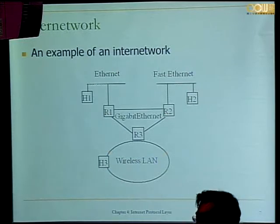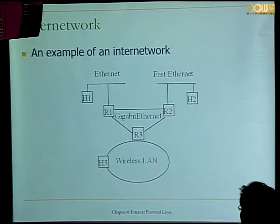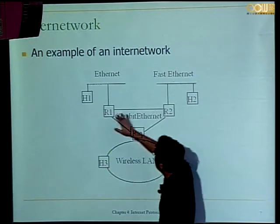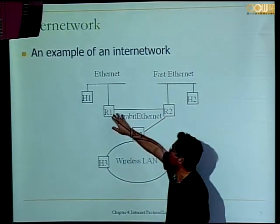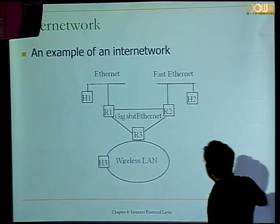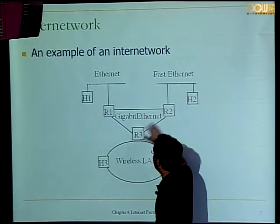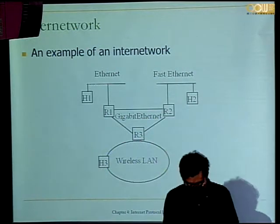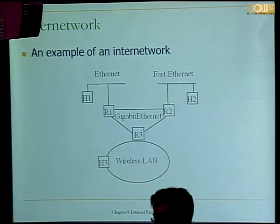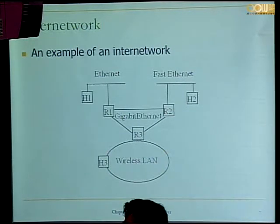If you roll back to chapter three, we can use bridges or layer-two switches instead of routers to interconnect the three LANs together. They would do self-learning bridging and run the spanning tree. But here we don't do that. So the answer is: if you want to interconnect several LANs, you can use either bridging or routing — either way will do the job.